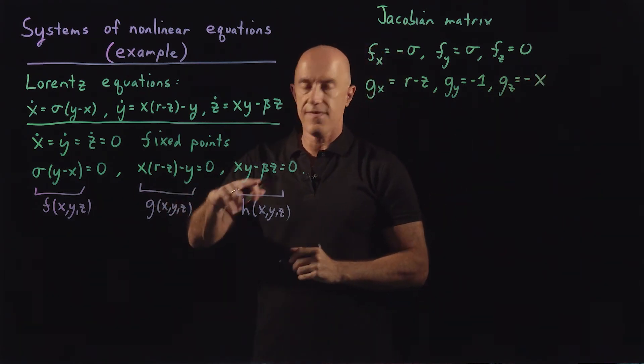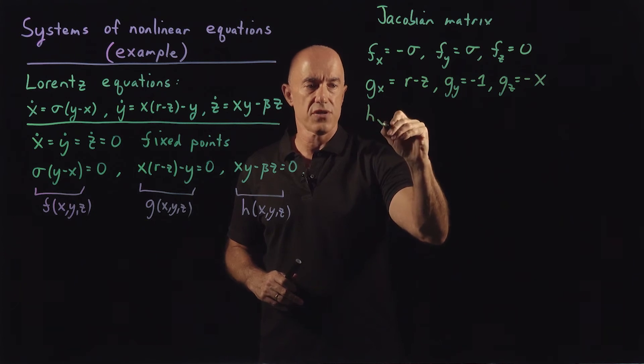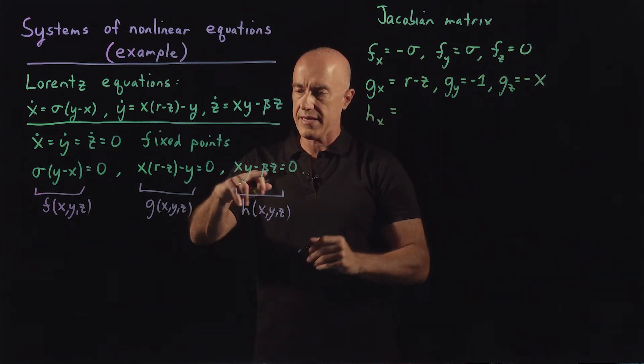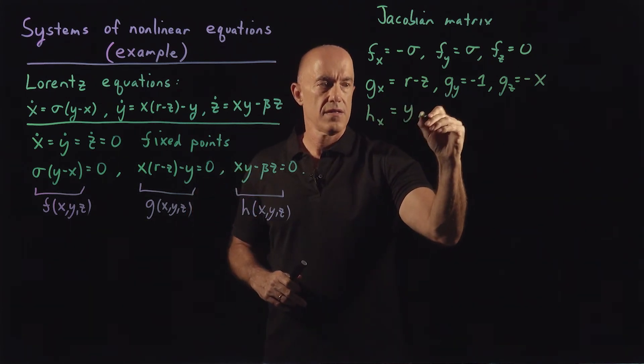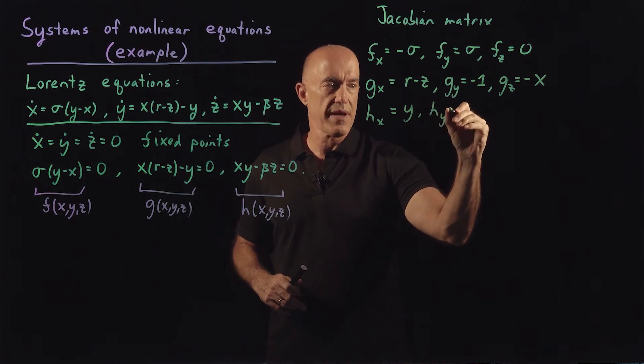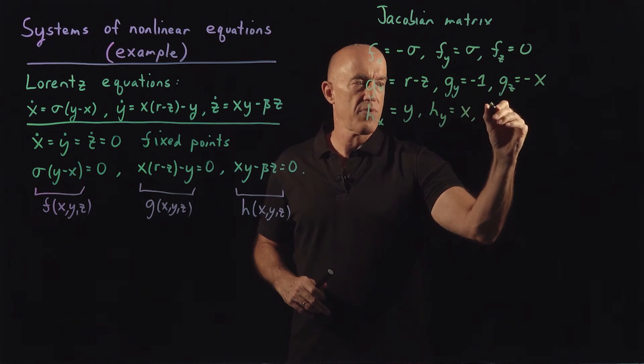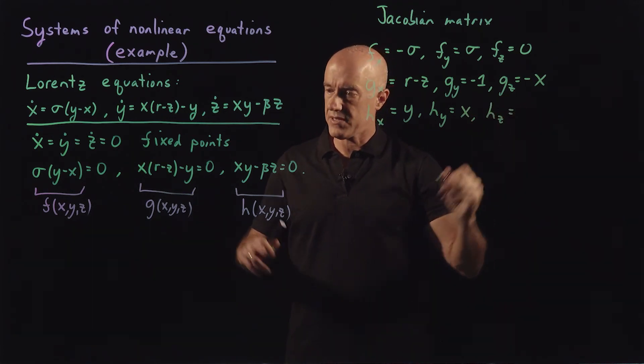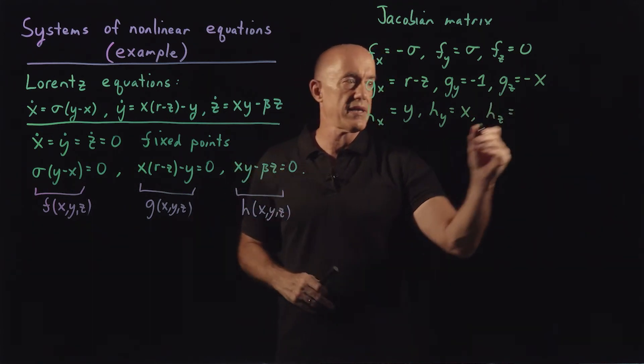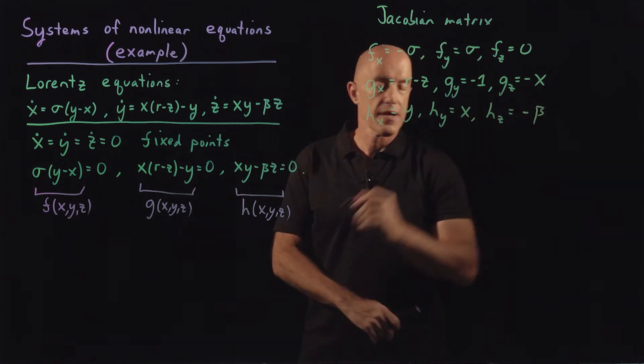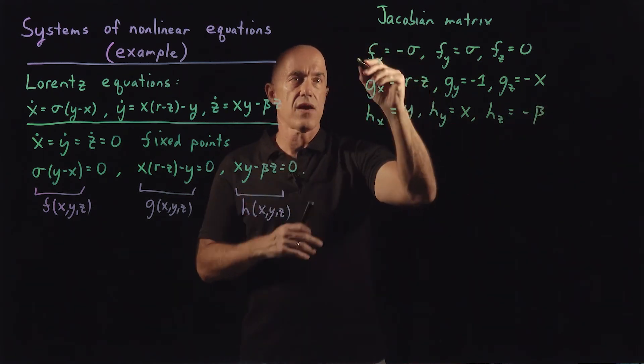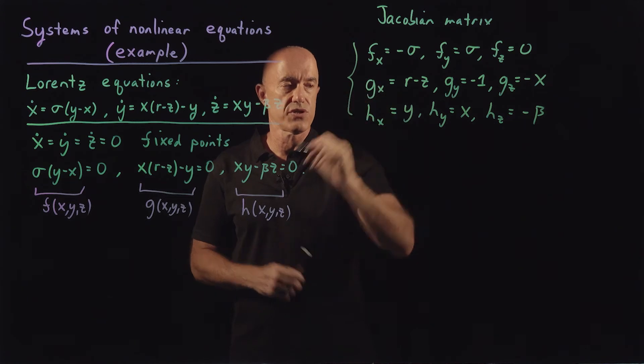Finally h, the partial of h with respect to x is y. The partial of h with respect to y is x. And the partial of h with respect to z is minus beta. That's going to be our Jacobian matrix.